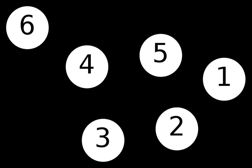A tree is a connected graph with no cycles. A forest is a graph with no cycles, i.e., the disjoint union of one or more trees.